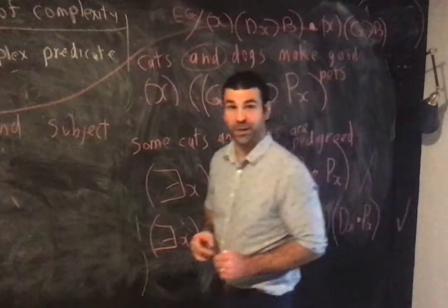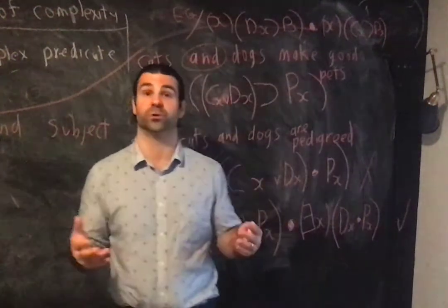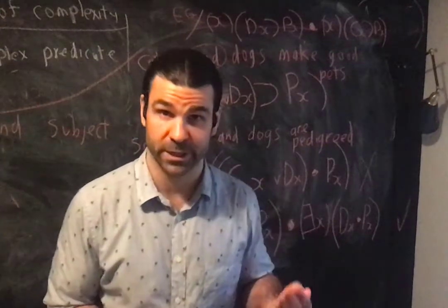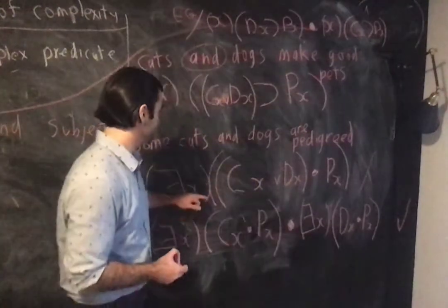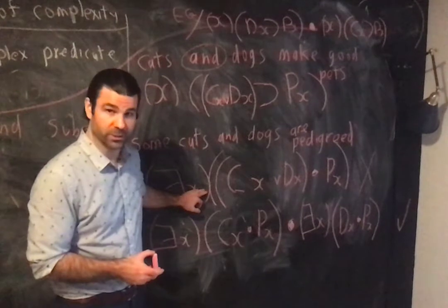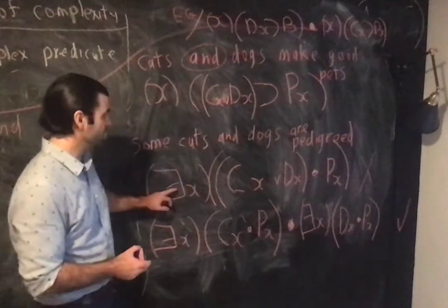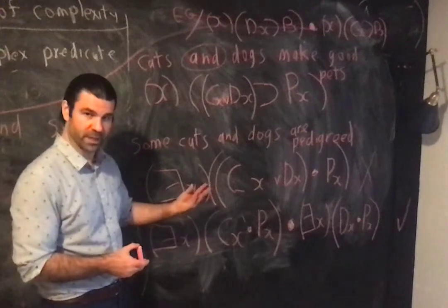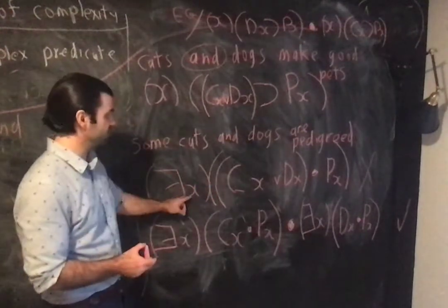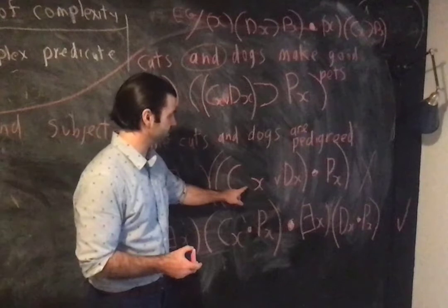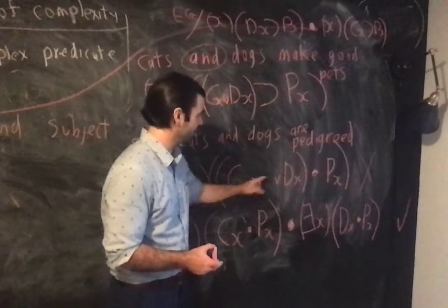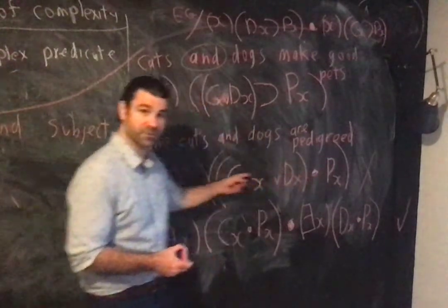So if you give me one pedigreed cat, or if you give me a universe that has just one pedigreed cat in it, then this is true, even if there are no pedigreed dogs. If you give me one pedigreed cat, then there is at least one thing such that it's either a cat, it can be a cat or a dog, it's a cat and it's pedigreed, I've satisfied this.